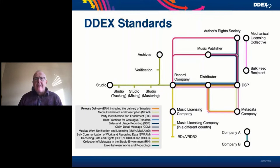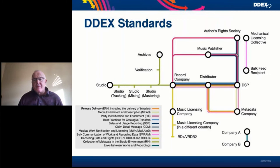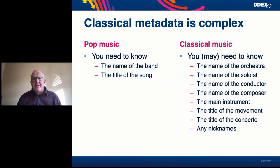We now have a significant number of families of standards which pretty much cover every aspect of the business transactions that exist between the various different types of companies operating in the whole ecosystem. We have standards that help collect data in the studio, ensure it gets into the value chain, and various different standards designed for specific circumstances between different types of business partners. There is a lot of commonality within each of these standards, with a number of common building blocks throughout. Today we're focusing purely on the exchange of information about classical music.